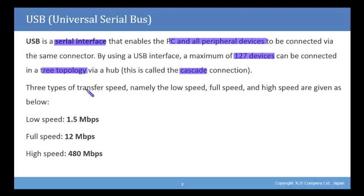Three types of transfer speed, namely the low speed, the full speed, and the high speed are given as below. Low speed is 1.5 megabits per second, full speed is 12 megabits per second, and high speed is 480 megabits per second.